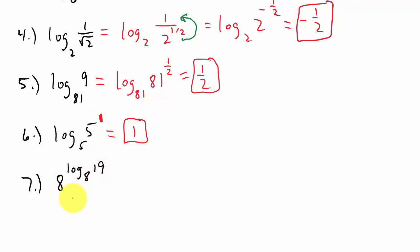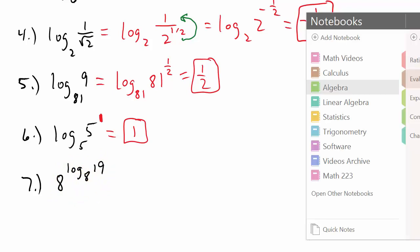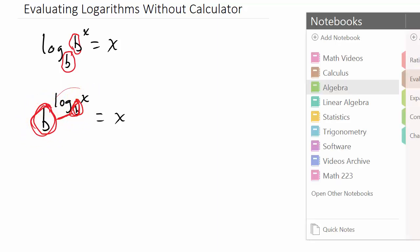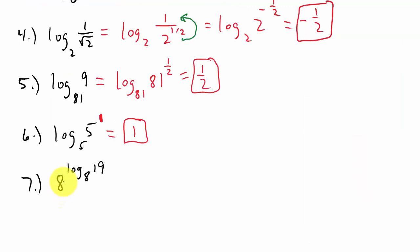Number 7: 8 raised to the log base 8 of 19. This matches the second property — b raised to the log base b of x equals x. Here the base of the exponent and the base of the log are both 8, so the answer is what we're taking the log of, which is 19.